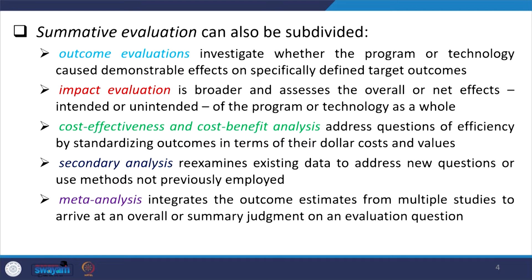The second is impact evaluation, which is broader and assesses the overall or net effects — intended or unintended — of the program or technology as a whole. The net effects are mostly emphasized. The third, cost-effectiveness or cost-benefit analysis, addresses questions of efficiency by standardizing outcomes in terms of their cost or the values incurred for running the project until the final outcome. The evaluation methods are also simultaneously discussed with their budget — if the budget is very limited, the evaluation methods are not going to be very effective.